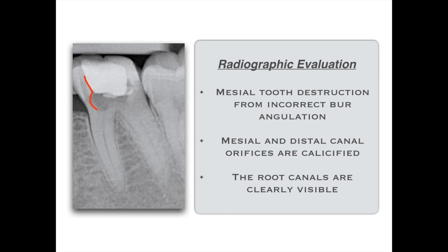Our goal here is to not destroy or destruct any more tooth structure. We will maintain whatever tooth structure is there and only search without destruction on the mesial side. Second, I'm going to look at the calcification. We can see the orifices of both the mesial and distal canals are calcified. I need to negotiate 3 to 4 millimeters into the orifices in order to find the canal and negotiate to the apex. The advantage here is that beyond the calcification the canals are clearly visible in this radiograph.